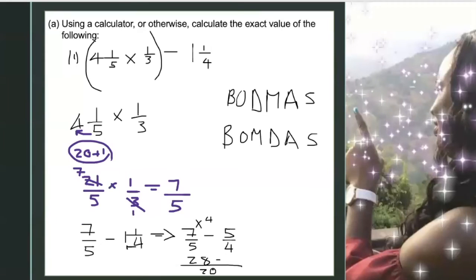Minus, 4 into 20 goes 5 times. So 5 times 5, that's 25. So subtracting, we have 28 minus 25, that gives us 3 over 20. And that's it.